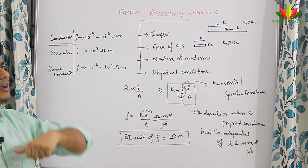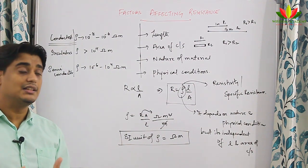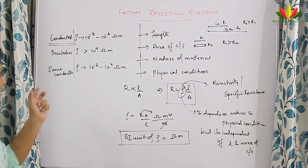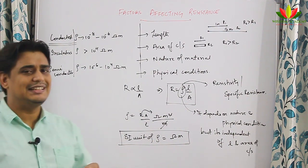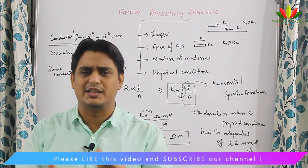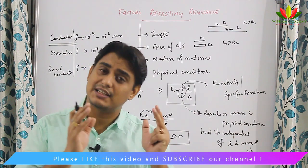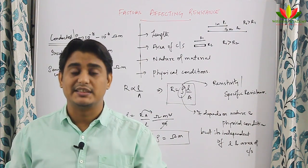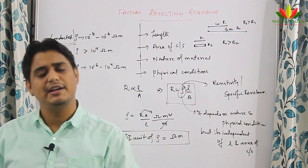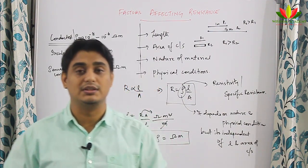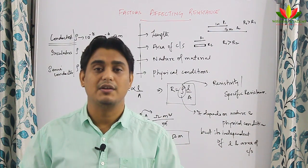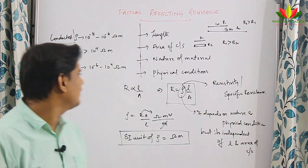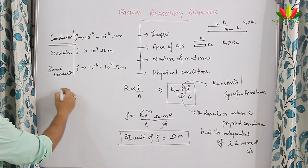Insulators have resistivity greater than 10 to the power 4 ohm·meter — some materials have insulation properties in the range of 10 to the power 12 ohm·meter. Semiconductors are materials whose resistivity lies between that of conductors and insulators — between 10 to the power minus 6 and 10 to the power 4 ohm·meter. We can make a semiconductor behave as a conductor or as an insulator. Semiconductors like germanium and silicon find enormous use in today's world — all electronic devices have semiconductors playing a major role.